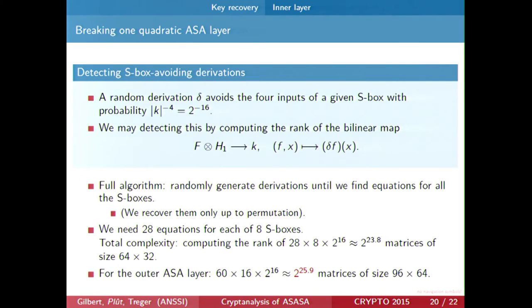We do this repeatedly. This happens with probability 2 to the minus 16, and we detect it easily just by computing the rank of a small matrix of size 22 by 64. We need 28 equations for each S-box (a space of dimension 4 in a space of dimension 32), and we need this for each of 8 S-boxes. The total number of matrices for which we need to compute the rank is about 2 to the 24 for the inner layer. For the outer layer, which is a bit larger, it is about 2 to the 26 matrices of size 96 by 64.